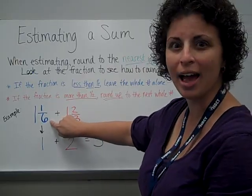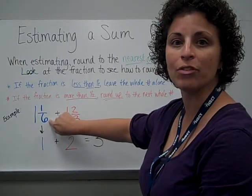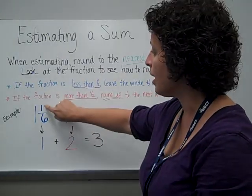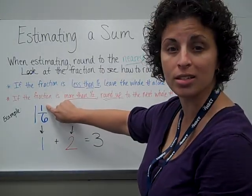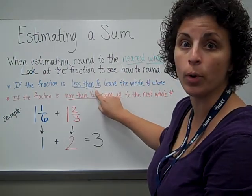the denominator is 6. To decide where half is, I need to think, what is half of 6? Well, that would be 3. And since this is 1, 1 is less than 3, and so this fraction is less than 1 half.